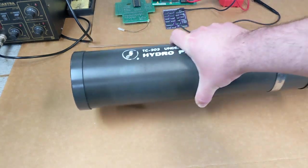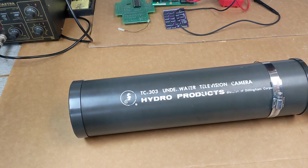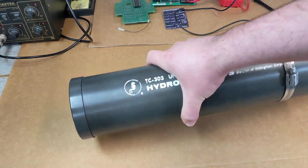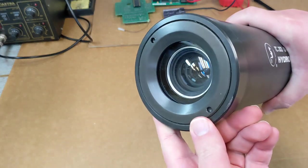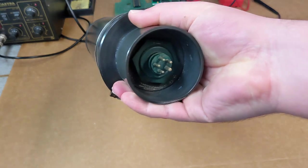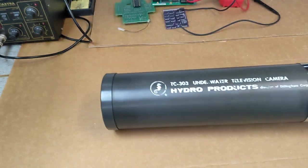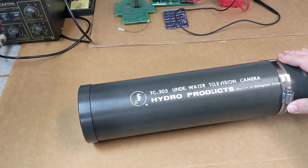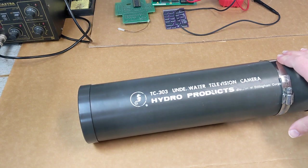All right, here's an unusual item. It says underwater television camera. Heavy pipe, probably about ten pounds. It's got a nice big lens in the end and the other end is a weird unknown five pin connector. I don't know much about this. It was probably for some kind of underwater inspection. It's probably pretty old, maybe seventies.